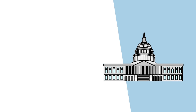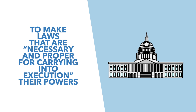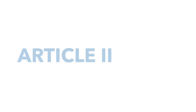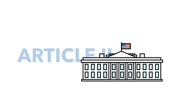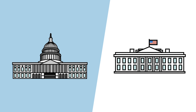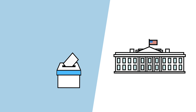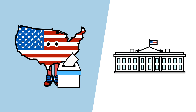It gives Congress the power to make laws that are necessary and proper for carrying into execution the powers given to Congress. Article 2 invests the powers of the executive branch in an indirectly elected president who has many duties, but its primary function is to execute the laws as they are passed by Congress. The president is indirectly elected because while the direct popular vote is considered, the president is actually elected by the electoral college.